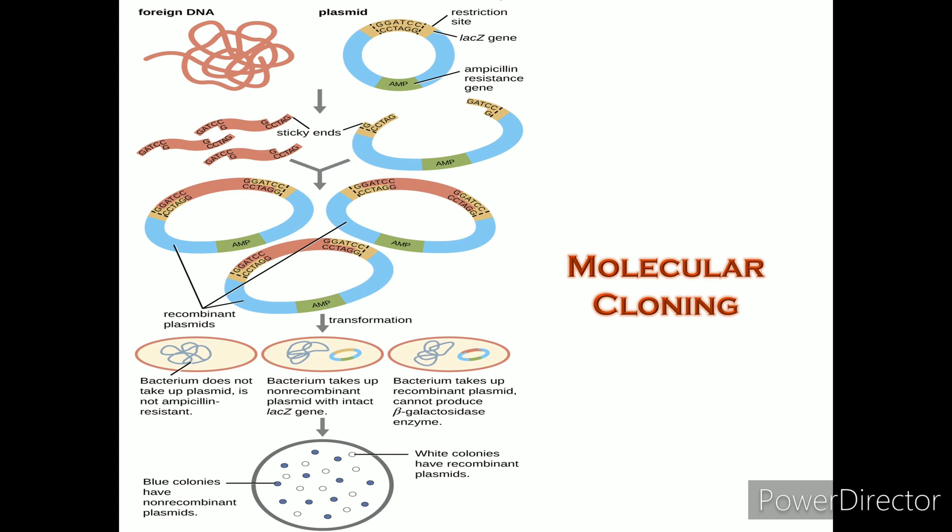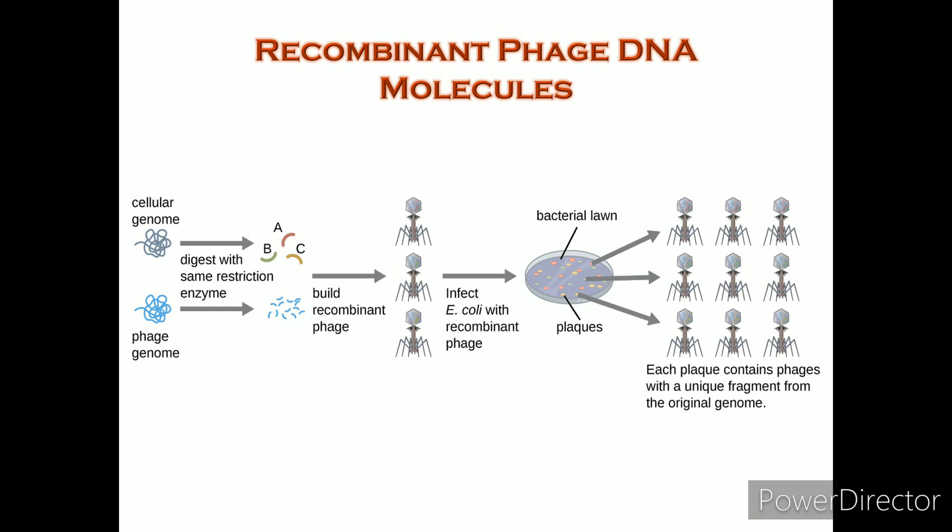Molecular cloning using bacterial transformation is outlined in this graphic flowchart. The generation of a genomic library facilitates the discovery of the genomic DNA fragment that contains a gene of interest. Recombinant phage DNA molecules are made by ligating digested phage particles with fragmented genomic DNA molecules. These recombinant phage DNA molecules are packaged into phage particles and allowed to infect a bacterial lawn. Each plaque represents a unique recombinant DNA molecule that can be further screened for genes of interest.